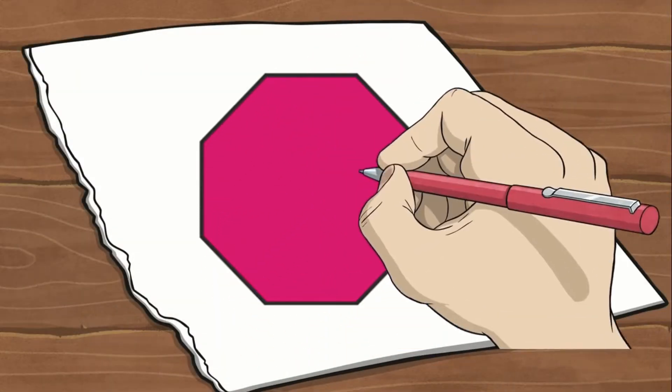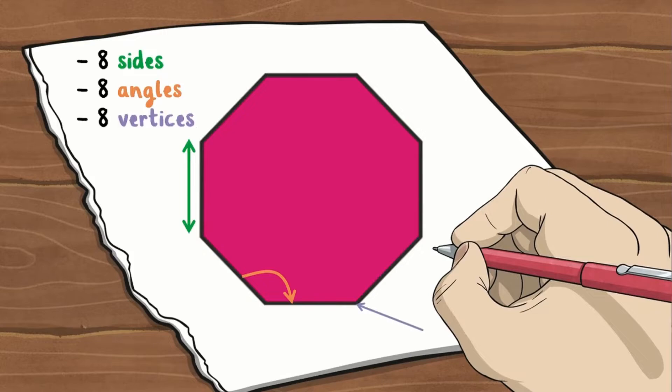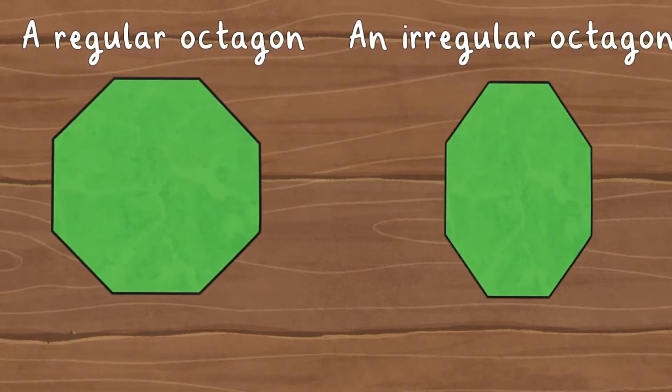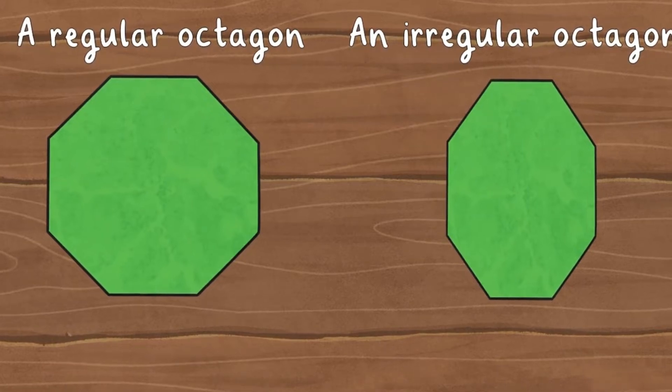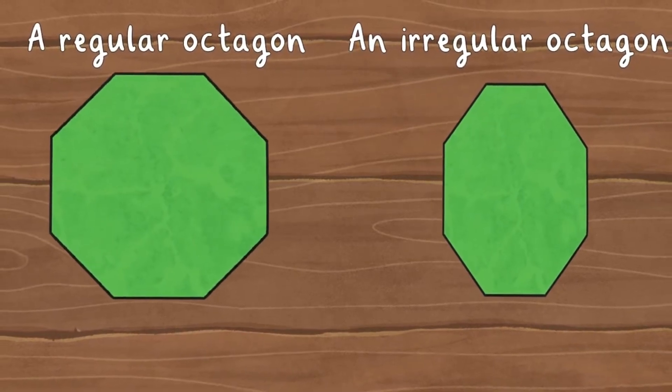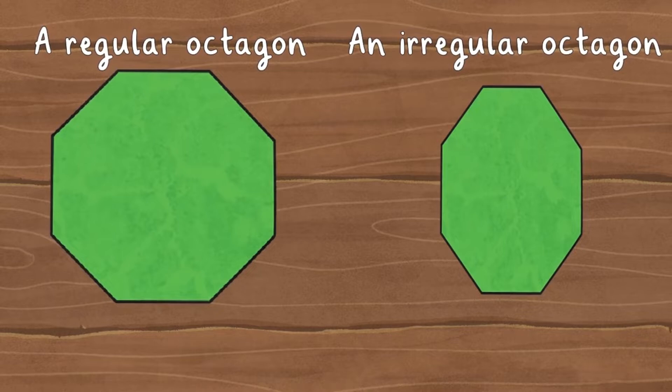An octagon is a two-dimensional shape with eight sides, eight angles and eight vertices. An octagon can be regular or irregular. This depends on their shape and how they have been drawn. When all the sides and angles are equal, an octagon is regular.